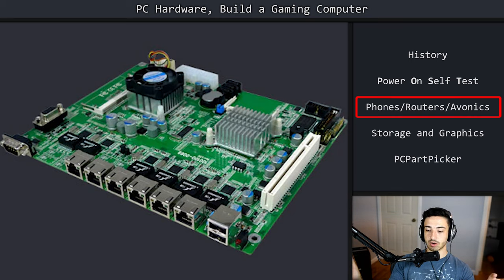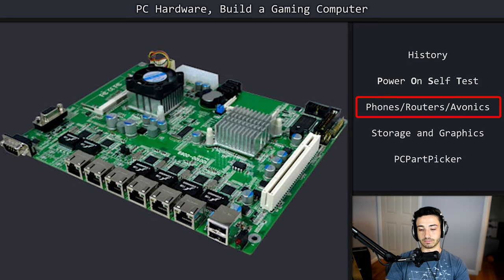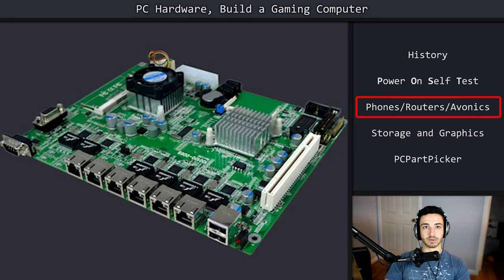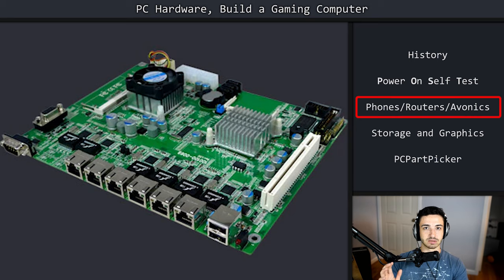Most things performing operations — network devices, servers, even avionic systems on airplanes — run standard hardware like we've discussed. They all have processors, memory, and may have a POST-type test, though avionics might send diagnostics to a central system rather than beep. Whether it's a server, desktop, phone, router, switch, or any networking gear — at the root level, they are all computers.